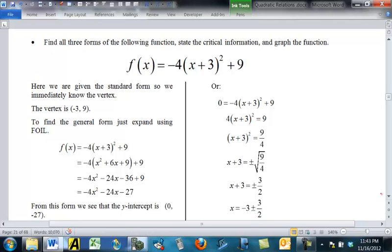And in your middle term, you go 3 times X and double it for 6X. Distribute the negative 4, that's negative 4X squared minus 24X minus 36. Take the negative 36 and the 9 together to get negative 27. So, now we know the Y intercept is 0, negative 27.